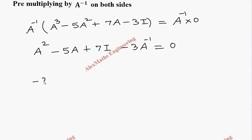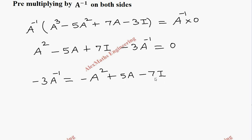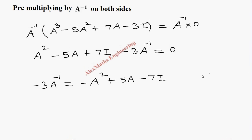From this, minus 3 A inverse equals — carrying the remaining terms to the other side — minus A squared plus 5A minus 7I. So we have to find what A squared is and substitute here, along with 5A and the identity.